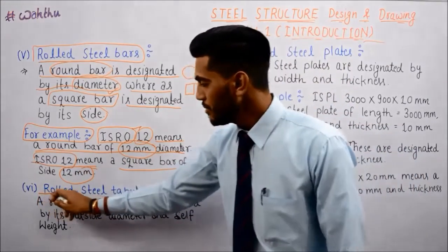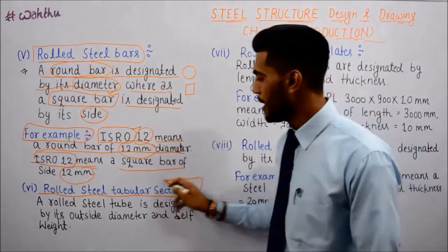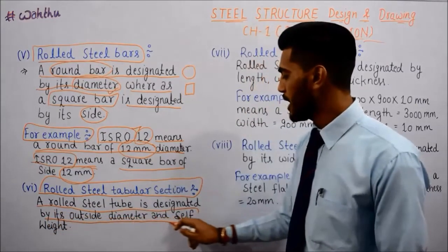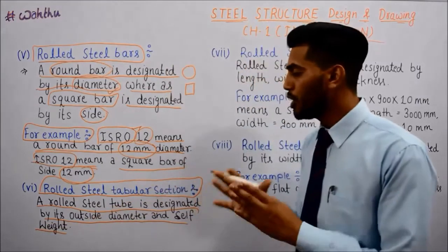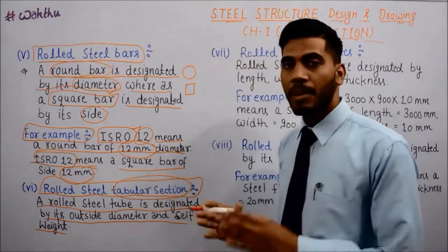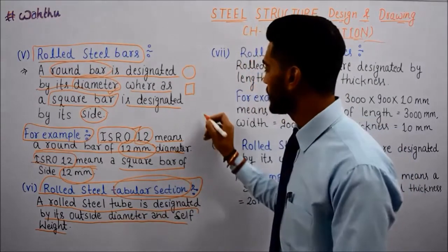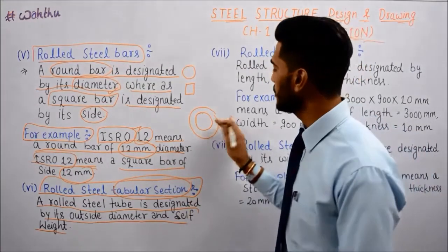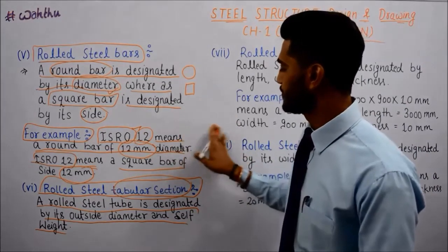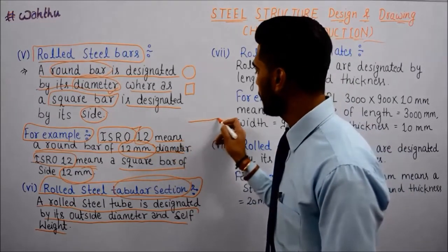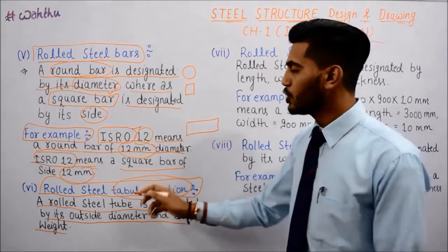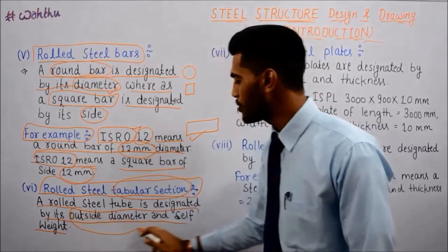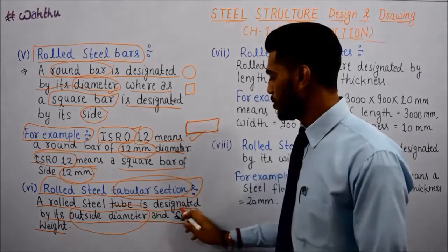Next, rolled steel tubular section. A rolled steel tube is designated by outside diameter and self-weight. When we take a rolled steel tubular section, it is in tubular form and we mention the outside diameter along with its self-weight.